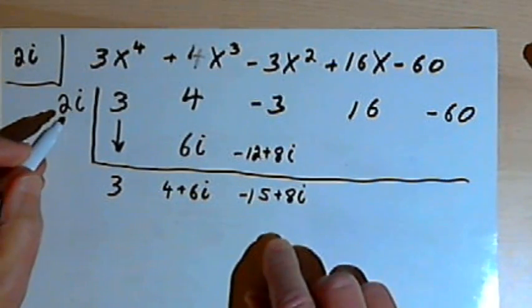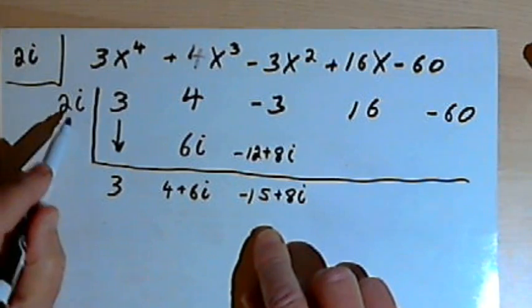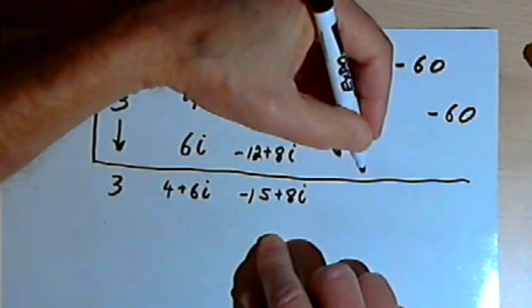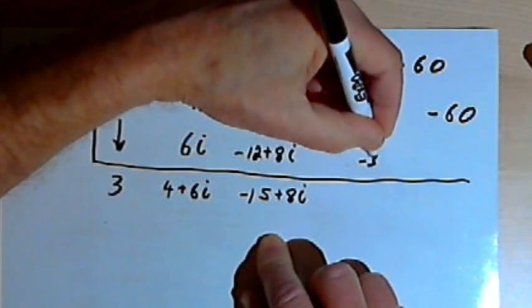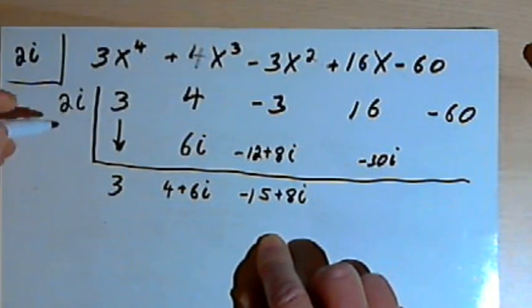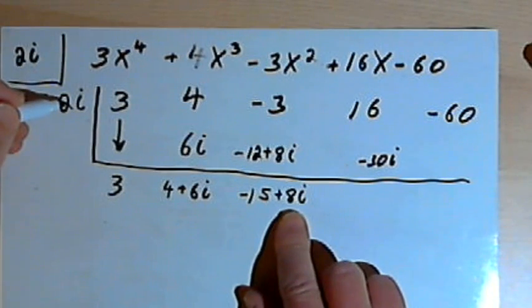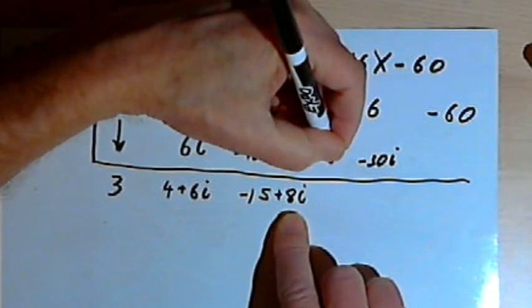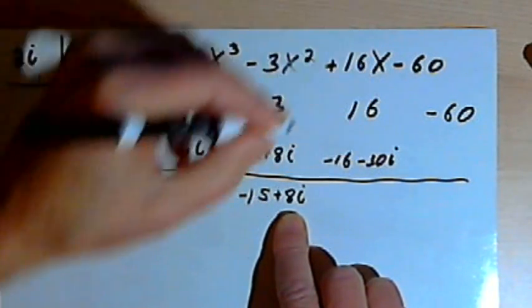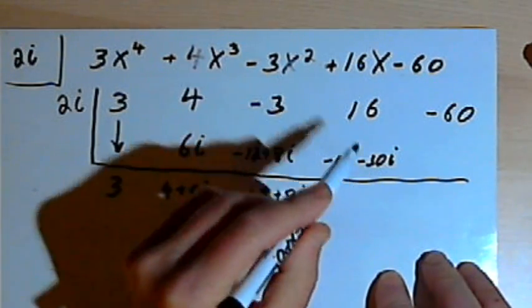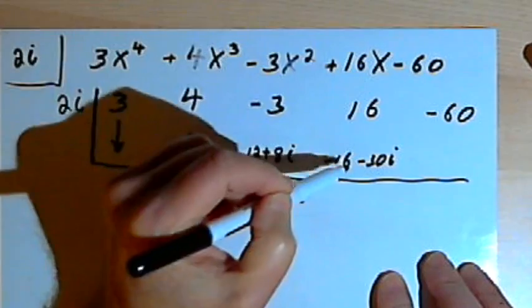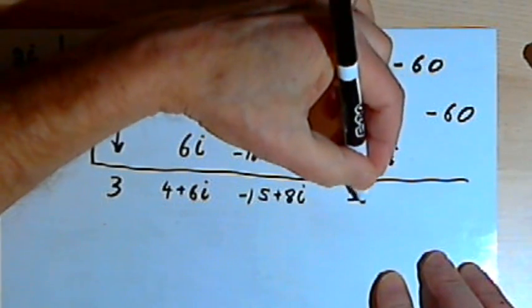And I multiply again. I've got a 2i and a negative 15. So that's going to be negative 30i. And I've got 2i and 8i. I multiply those together, that would be 16i-squared, which is negative 16. So I've got a negative 16 minus 30i. And I'm adding that together with the 16. Well, the 16 and negative 16 cancel, and I end up with just negative 30i.